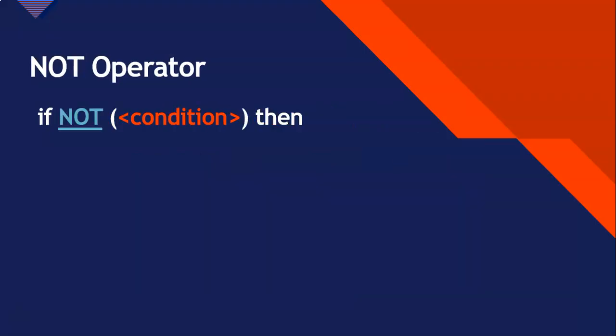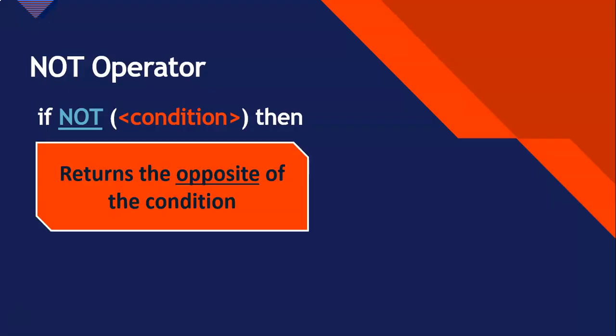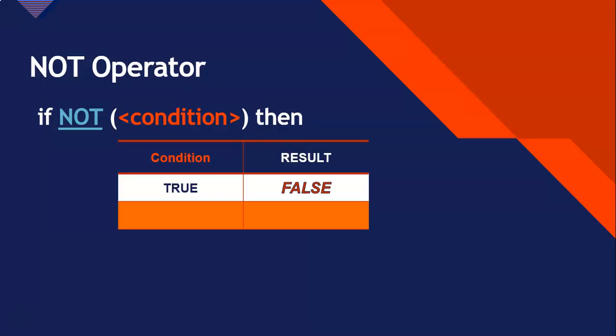There's also a NOT operator. This takes in one condition and returns the opposite of that condition. If the condition is true, it converts it to false. And if it's false, it converts it to true. So that's how the NOT operator works.